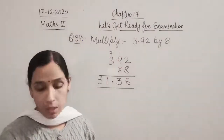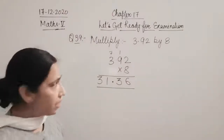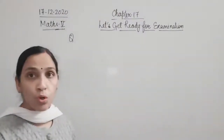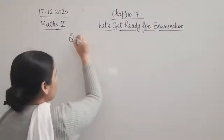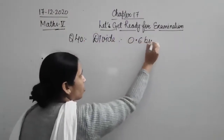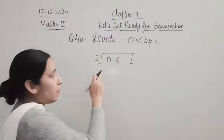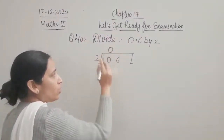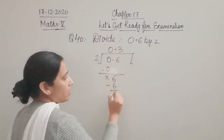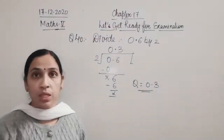In multiplication, do it as you would with whole numbers, then just count the decimal places from the back and put the decimal there. Question number 40: division. Divide 0.6 by 2. Write 0.6 divided by 2: 0 divided by 2 gives 0, then decimal point goes up, then 6 divided by 2 is 3. The quotient is 0.3.